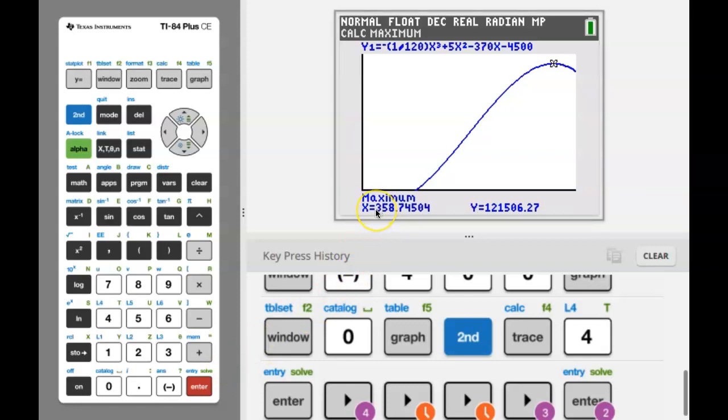So I would definitely write down this coordinate on my paper. We have a local maximum at 358.75 roughly. That's the number of boats and the profit, the maximum profit there is $121,506.27. So answering the question, should the company increase their production level in order to increase their weekly profit? The answer is yes. If the boats made right now are $340, we want to increase our production because this number, 358.7, is clearly larger than $340.